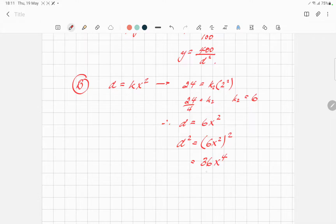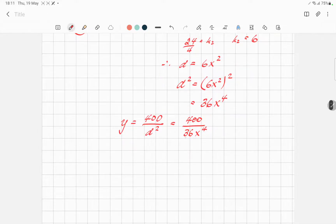You okay with that? We now put that back in the y equation. So, y equals 400 over d squared. So, that is going to be 400 over 36x to the 4. And now it's a question of tidying that up.